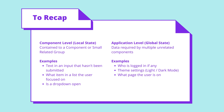So to recap: component-level, or local state, is contained to a component or small related group of components — for example, text in an input that has not been submitted, what item in the list the user is focused on, or whether the dropdown is open. Things that are inconsequential to the wider application. On the other hand, application-level state, or global state, is data required by multiple unrelated components, such as: are they logged in? The theme settings. What page is the user on? And routing information such as that.